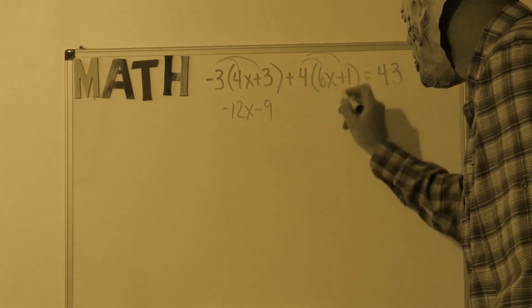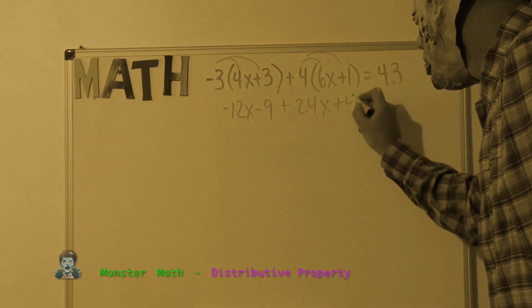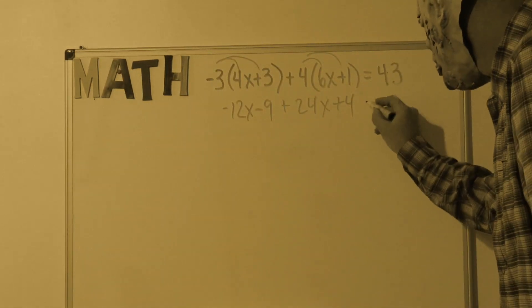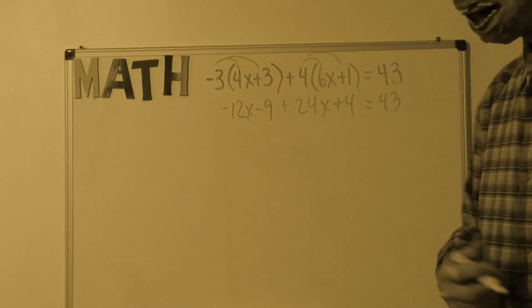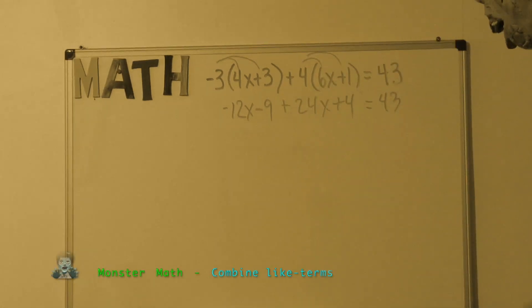And now I will do the same thing with the other distributive property on the left side of the equation. I did that correctly. Now the equation is a little simpler. There are no parentheses.